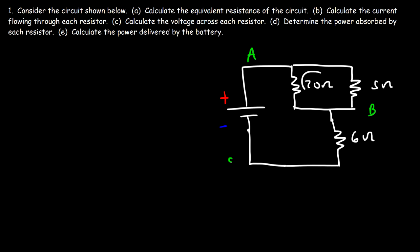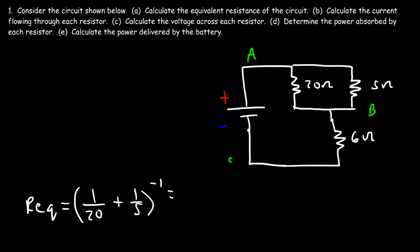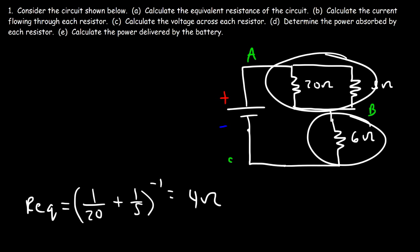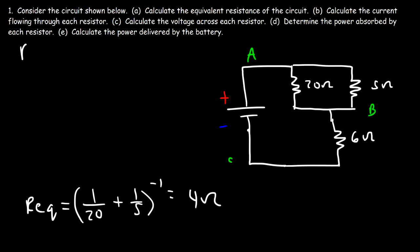Notice that the 20 ohm and 5 ohm resistors are in parallel. To calculate their equivalent resistance, it's going to be (1/20 + 1/5)⁻¹, which works out to be 4 ohms. We can replace those two resistors with a single 4 ohm resistor, which is in series with the 6 ohm resistor. Therefore the total resistance of the whole circuit is 6 plus 4, which is 10 ohms.